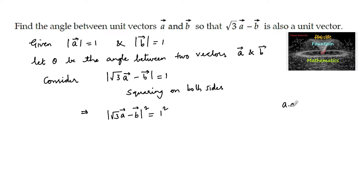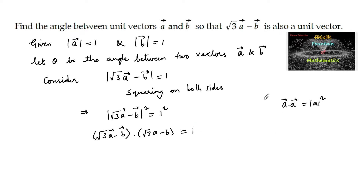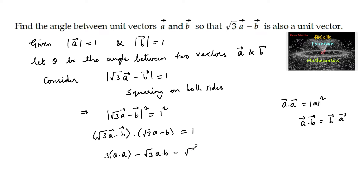Since we know that a·a = |a|², we can write (√3a - b)·(√3a - b) = 1. Using the commutative property, which says a·b = b·a, we expand: √3 × √3 times a·a, minus √3 times a·b, minus √3 times b·a, plus 1 times b·b, which equals 1.